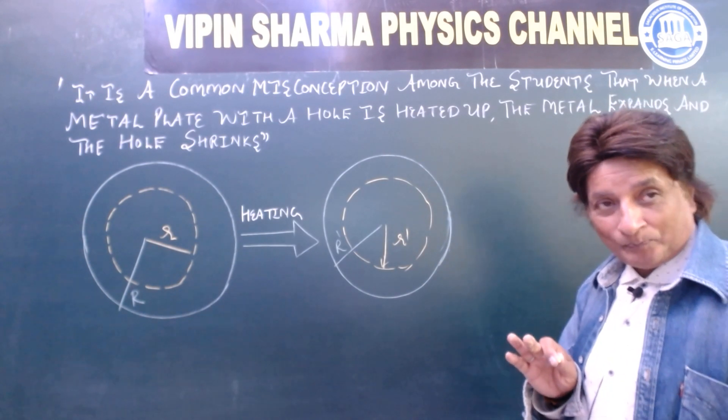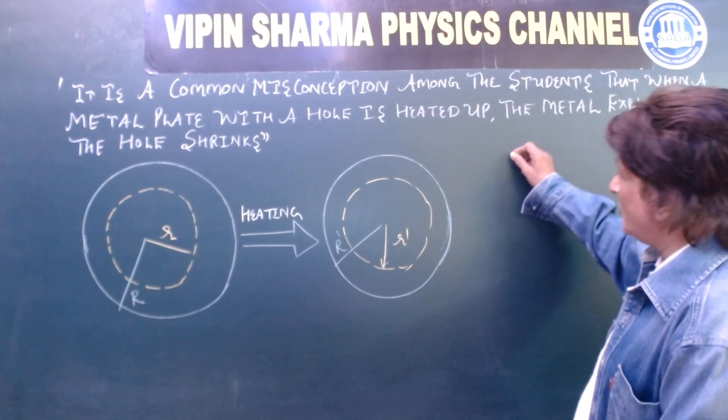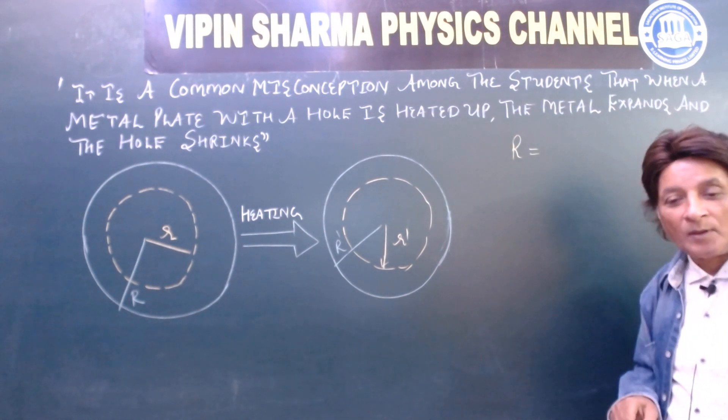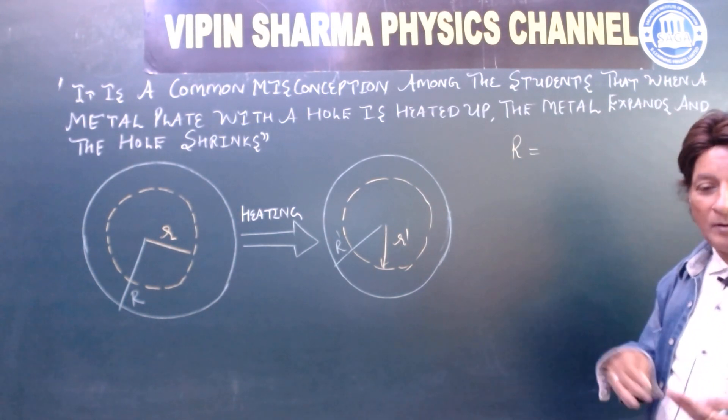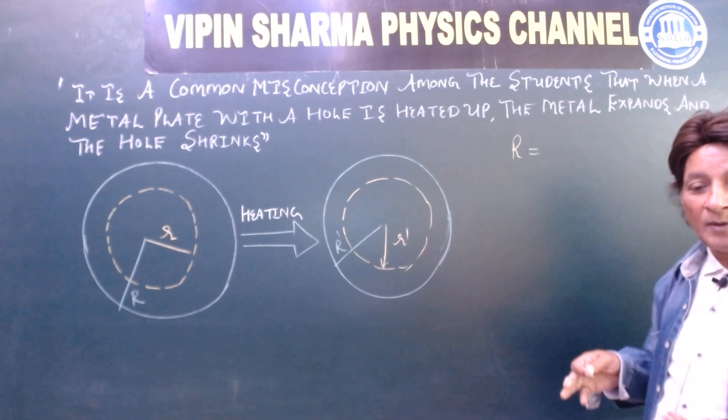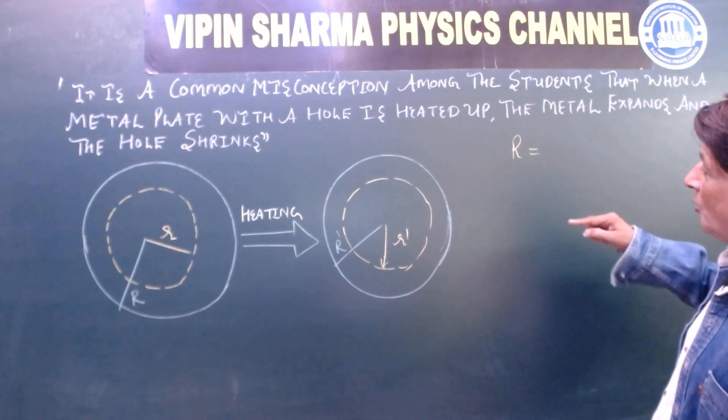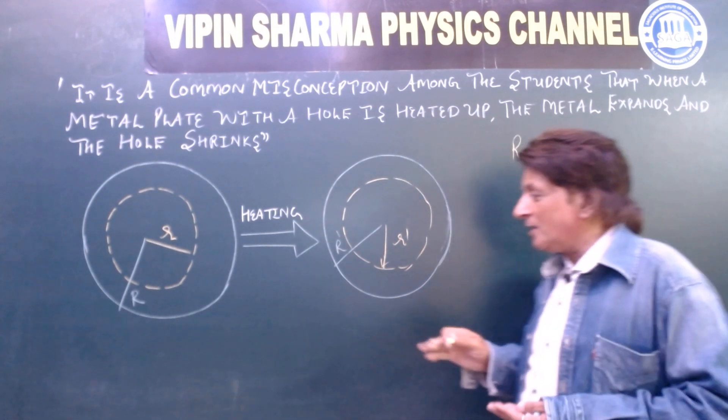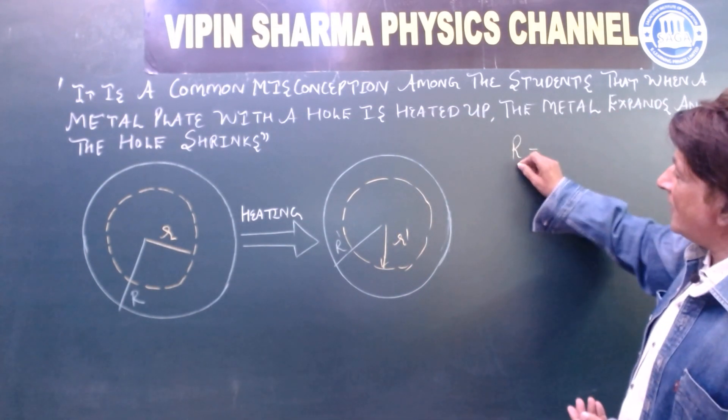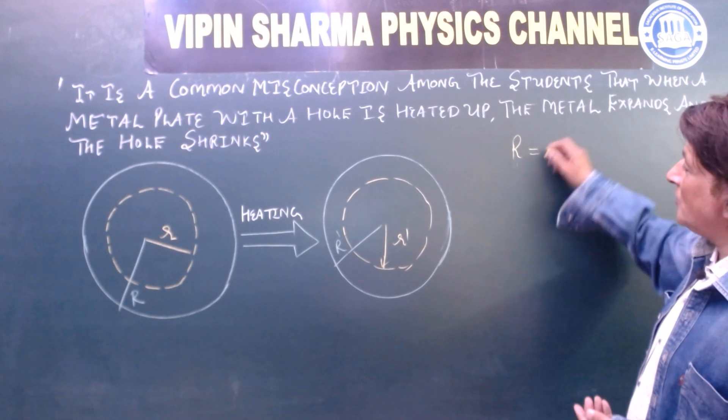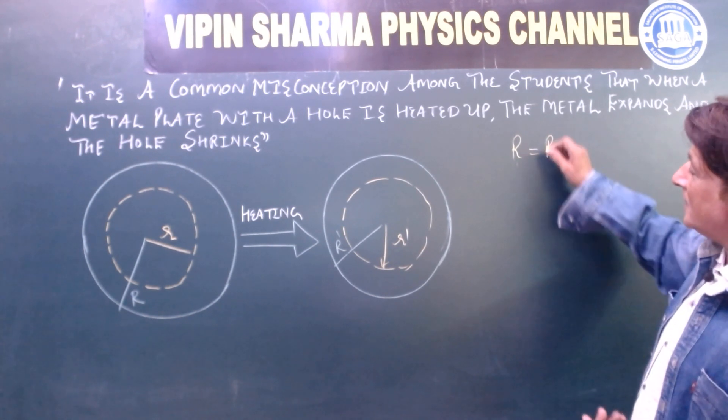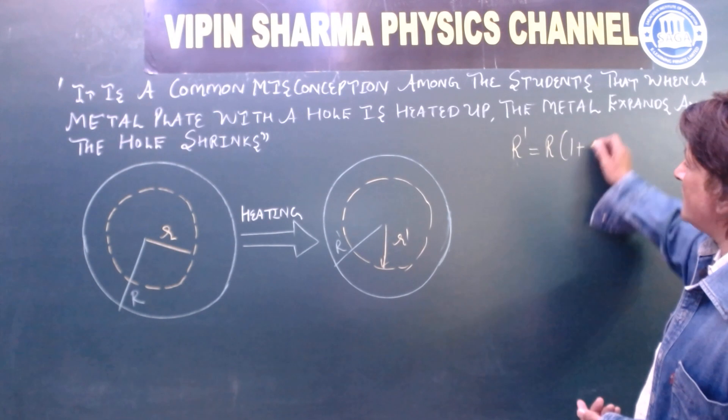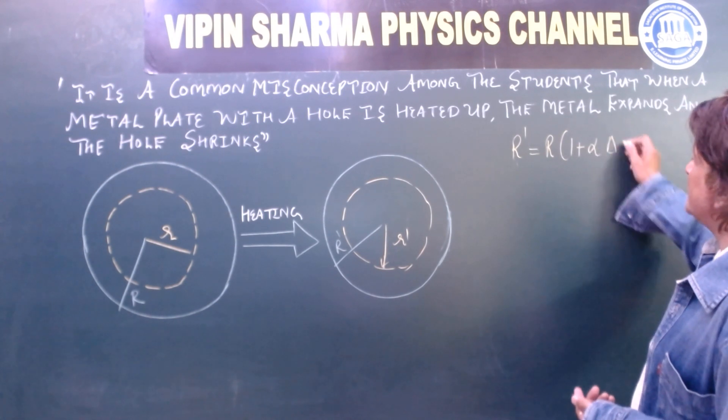Now dear students, if we take R, you know that is the original. We take R1. Here, R dash equal to R into 1 plus alpha delta t.